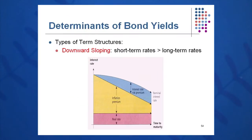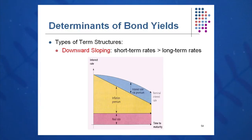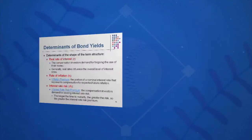Very occasionally, when interest rates are indicating that rates might be headed downward, you'll very rarely see this term structure slope downward. In this case, short-term rates are paying more than long-term rates. I think I've seen that maybe two or three times in my financial career — not very often.